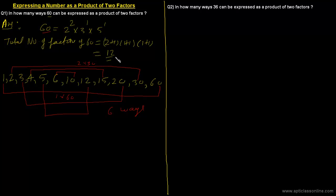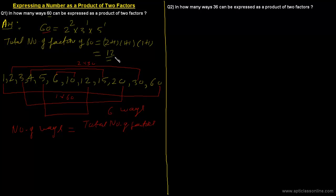The number of ways is calculated as: total number of factors divided by 2, because we are pairing the total factors into pairs of two. So 12 ÷ 2 = 6, which is the answer.